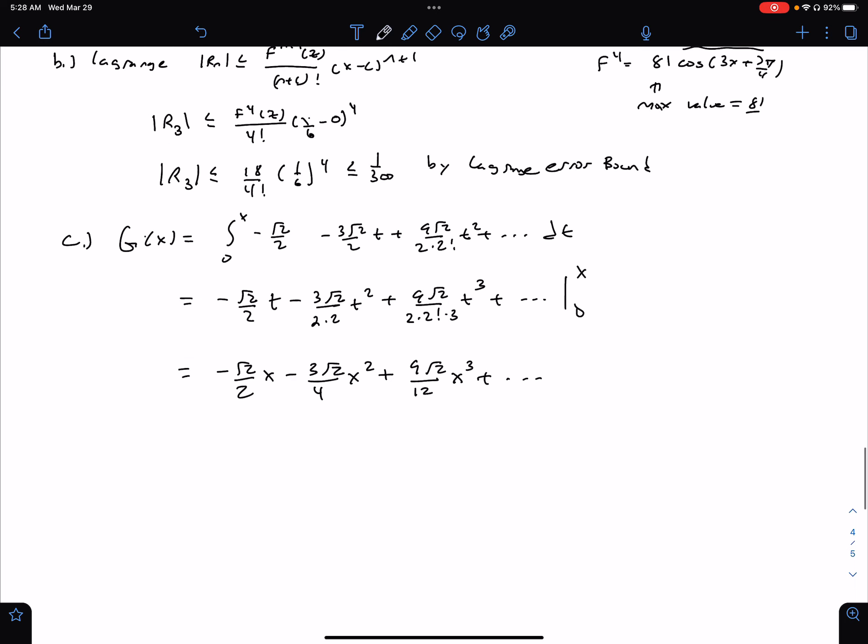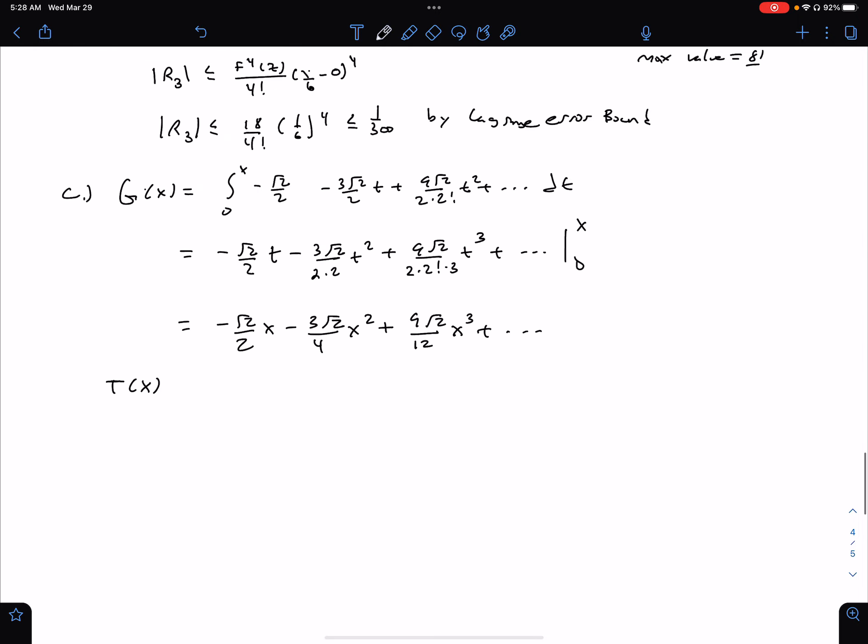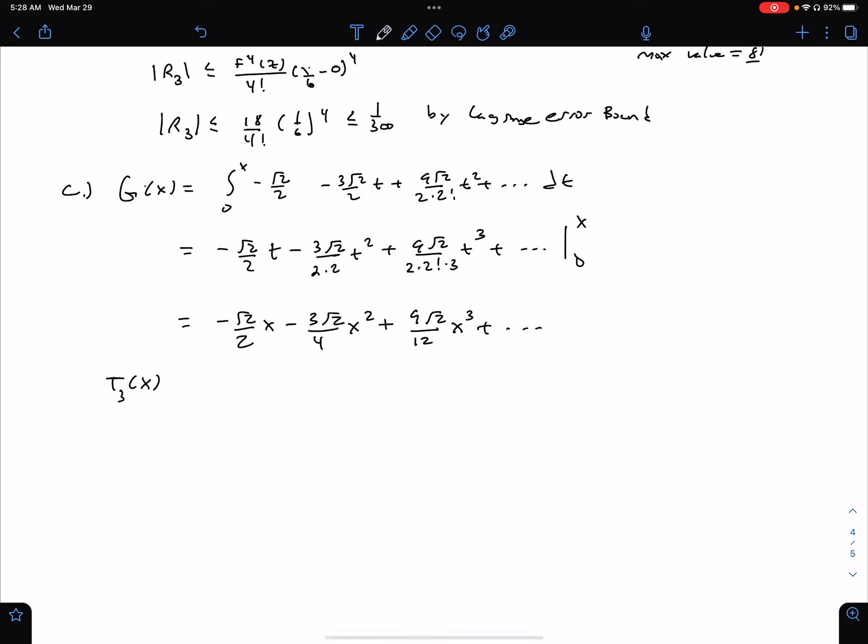so I would write, and they say call it T(x). I think that they called it T(x), and I should put the 3 there for the degree. It becomes negative √2/2 x minus 3√2/4 x² and if I want to be fancy, I can reduce this, 3√2/4 x³. It's a Taylor polynomial, so we put the dot dot dot. All right. So there we have it. I hope you guys had some fun. I'll see you guys later.